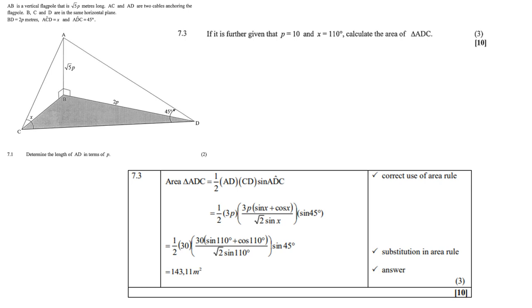7.3. If it's further given that p is 10 and x is 110, calculate the area of triangle ADC. Now, you can't use the area formula for triangle half base times height. That's not going to work. You must use the one we've learned in trigonometry.